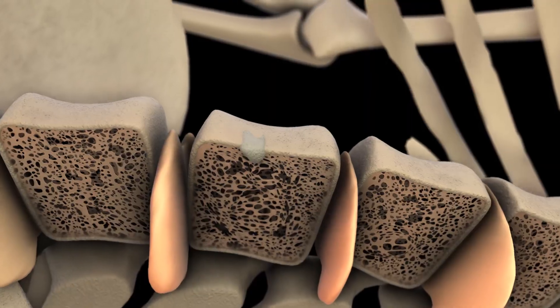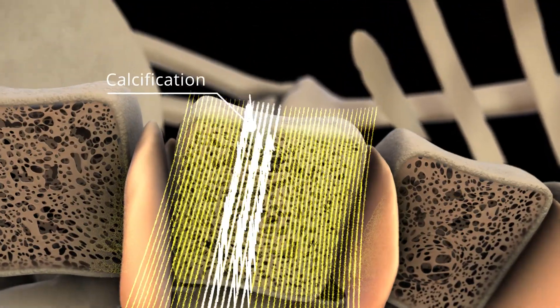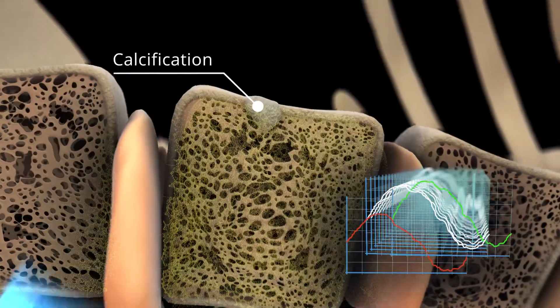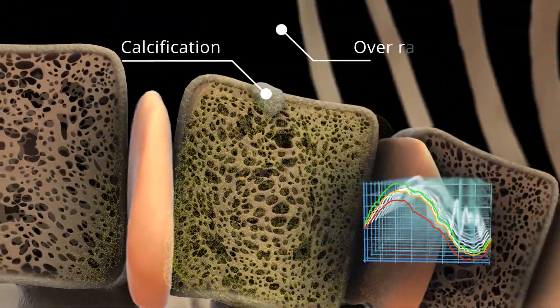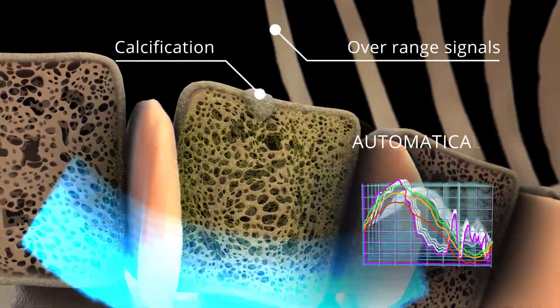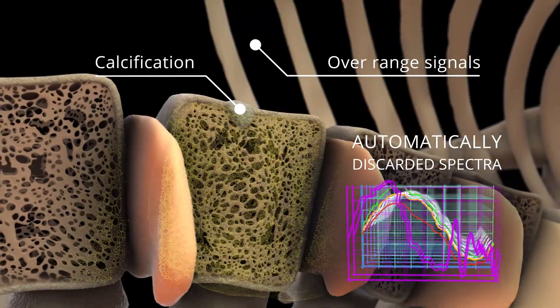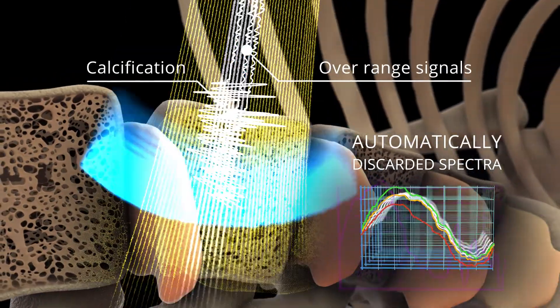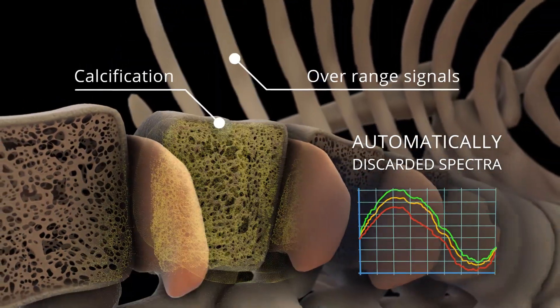REMS processes the raw data of 256 scan lines, automatically eliminating raw signals that belong to calcifications, osteophytes, and other artifacts.